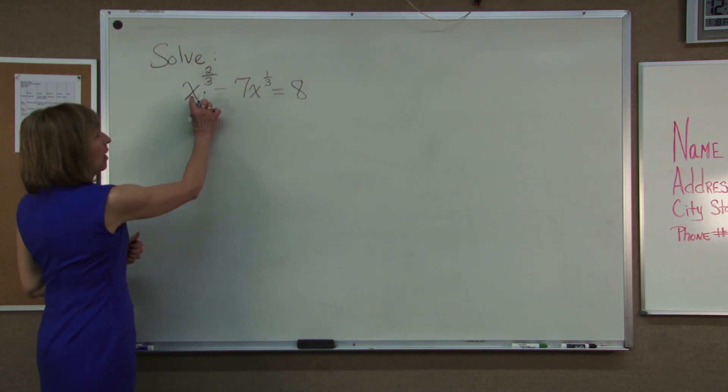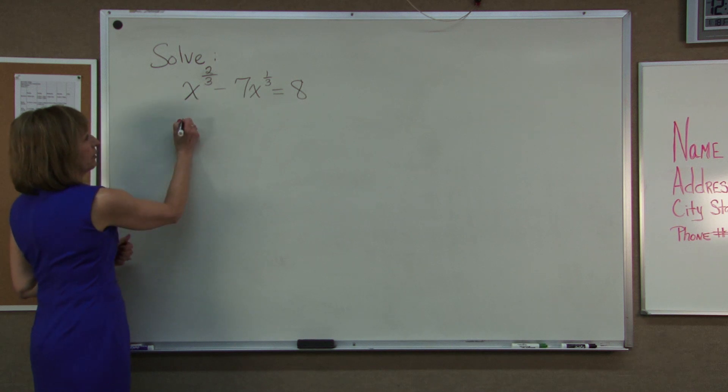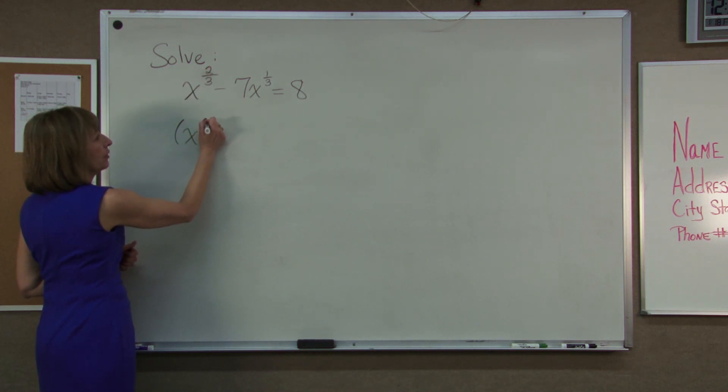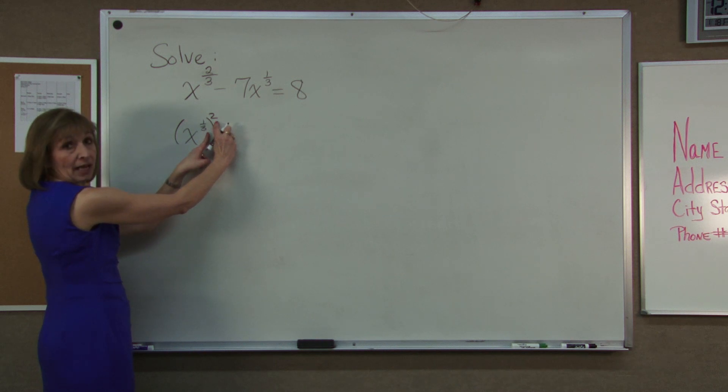Now if I think about how I could rewrite this first term as an expression that is a quantity squared. If I had x to the 1 third quantity squared, remember when you take an exponential expression to yet another power we keep the base and multiply the exponents and 1 third times 2 over 1 would be 2 thirds.